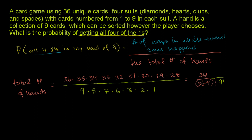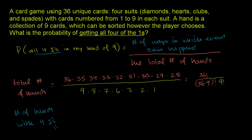Now, a little bit more nuanced thought process: how do we figure out the number of ways in which we can have all four ones? So let's figure out the number of hands with four ones. Imagine if we were only taking four cards — if a hand only had four cards in it. Well, if a hand only had four cards in it, then the number of ways to get a hand with four ones — there would only be one way, one combination. You just have four ones. That's the only combination with four ones if we were only picking four cards.